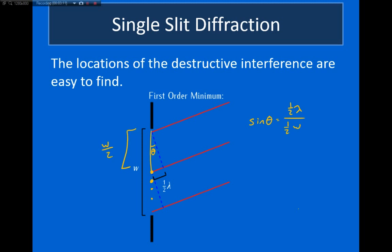So, it occurs when sin θ is equal to λ divided by the width of the slit. Keep in mind, now, this is the location of the destructive interference.